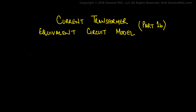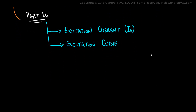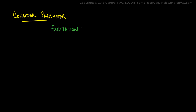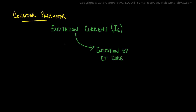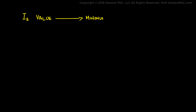Current Transformers Equivalent Circuit Model, Part 1b. In Part 1b of this series, we shall continue from our previous part and talk about excitation current and the excitation curve in much more detail. The excitation current i.e. is responsible for the excitation of the CT core — it actually makes the CT work in real life. But it is also the current that is lost through the magnetizing branch and corresponds to the CT error. The more the excitation current i.e., the more the errors or the more saturation that the CT will observe. The value of the excitation current should be kept as minimum as possible.